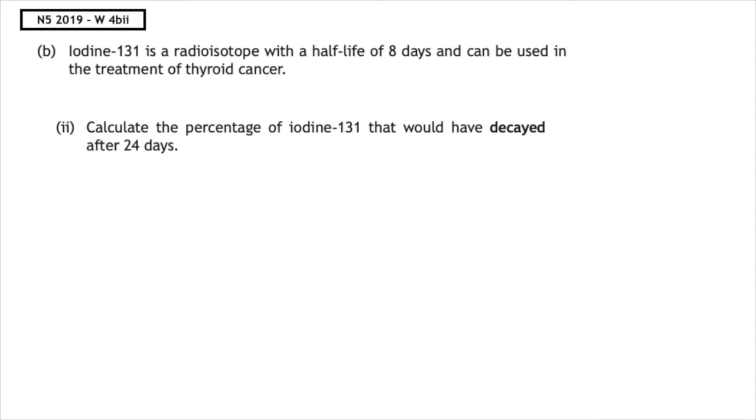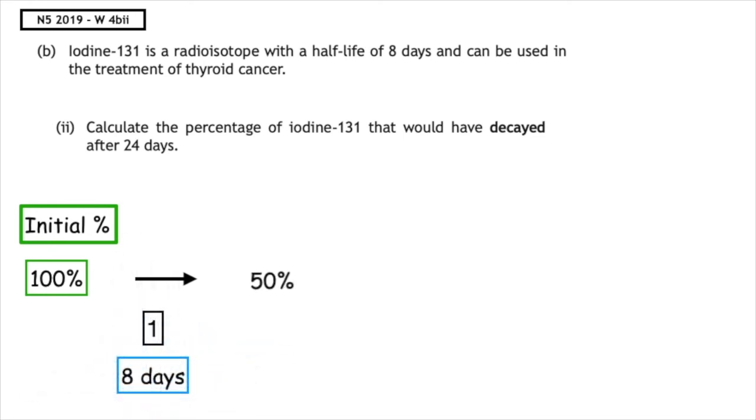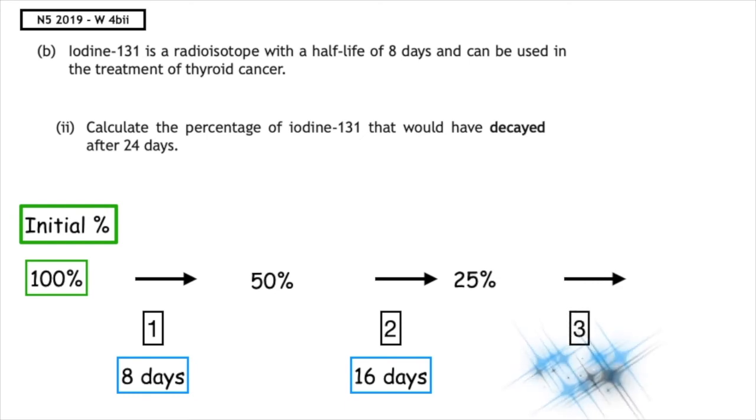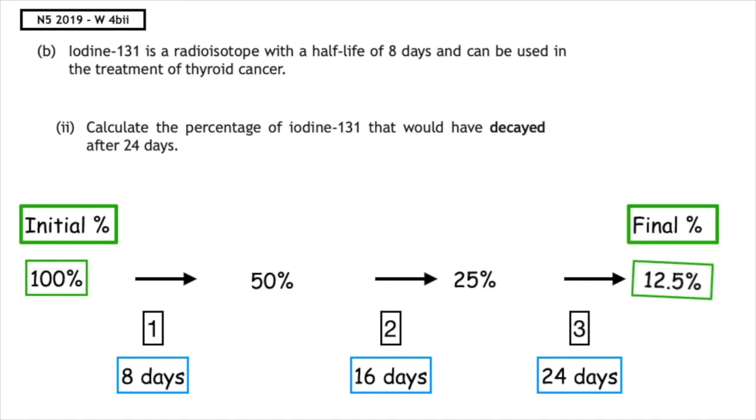So we start off with our initial percentage, which was 100%. 100% underwent one half-life, which would be a total of eight days, which will give us 50%. This would undergo a second half-life, which would give us a total of 16 days and give us a percentage of 25%. This would have to undergo a third half-life to give us a total time frame of 24 days, which would give us a final percentage of 12.5%.